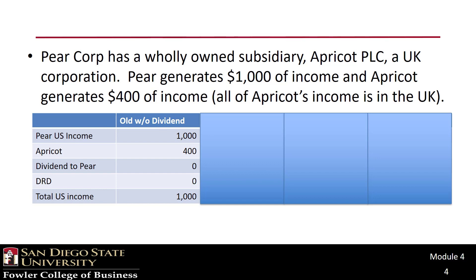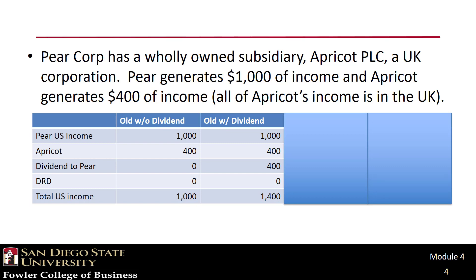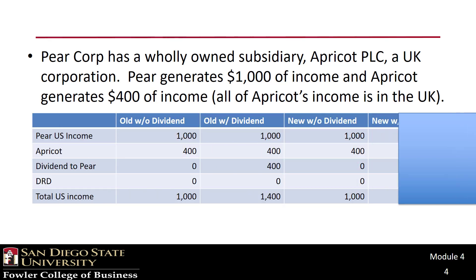Let's look at a four-column example. In the first column, we have the old U.S. hybrid system where the subsidiary pays no dividend. Because Apricot is not a U.S. resident, none of the income is going to be taxed in the U.S. — we're ignoring foreign taxes throughout this example. In column two, we have the old system with a dividend being paid by the sub up to the parent; in this situation, the $400 dividend is subject to U.S. income tax. In the third and fourth columns, we present the same scenarios under the new U.S. tax system. Notice that the $400 of foreign income is not included in the U.S. under either scenario, which reflects our territorial system.